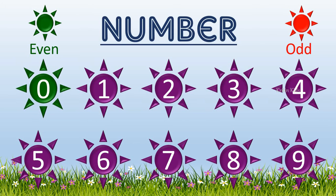Zero is an even number. One is an odd number. Two is an even number. Three is an odd number. Four is an even number. Five is an odd number. Six is an even number. Seven is an odd number. Eight is an even number. Nine is an odd number.